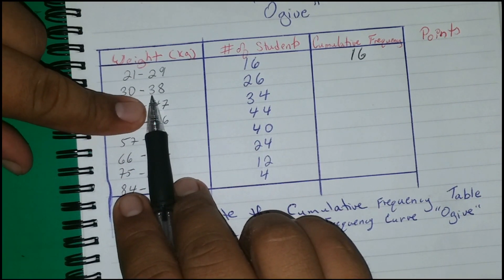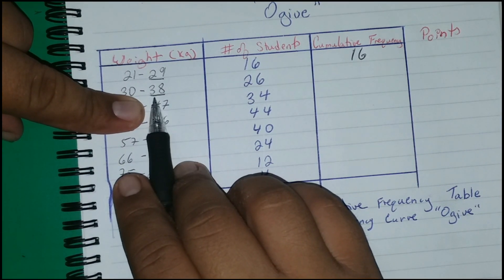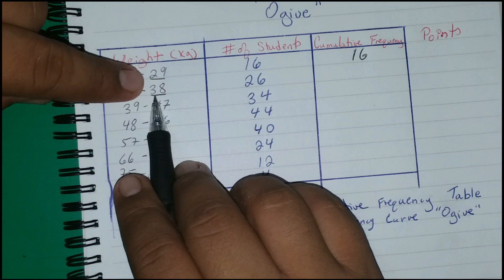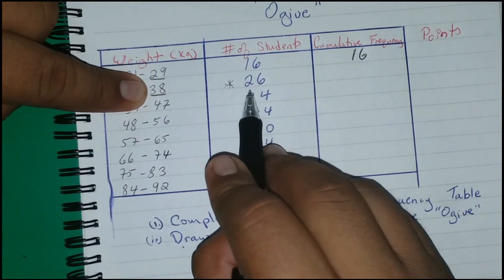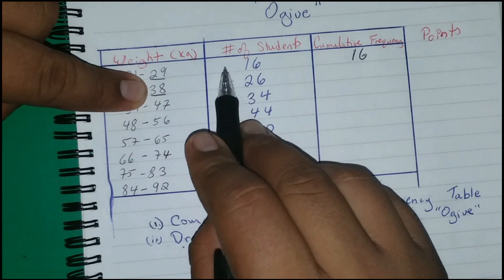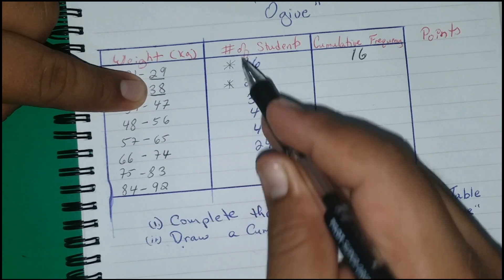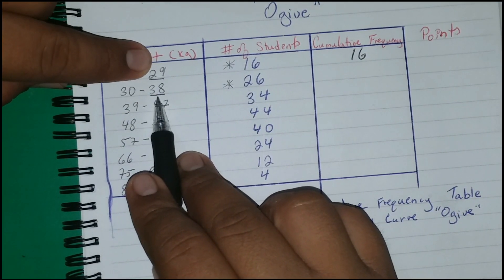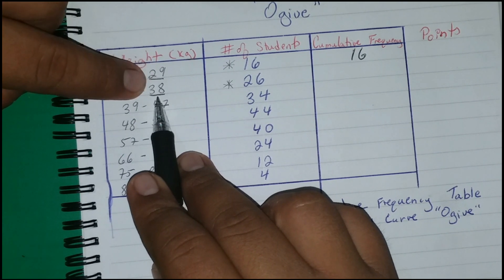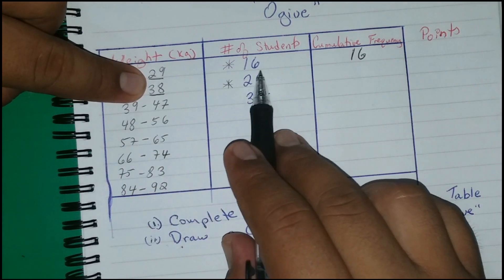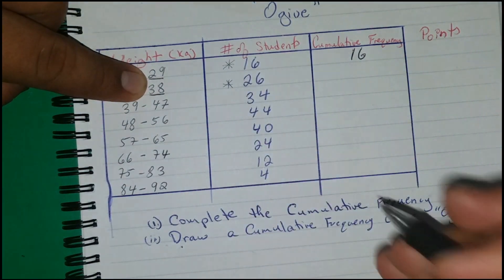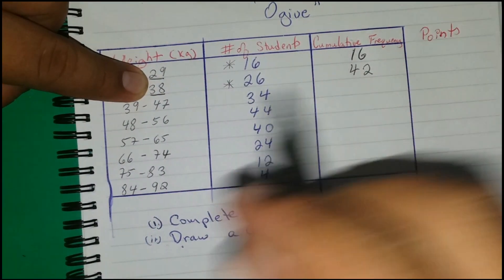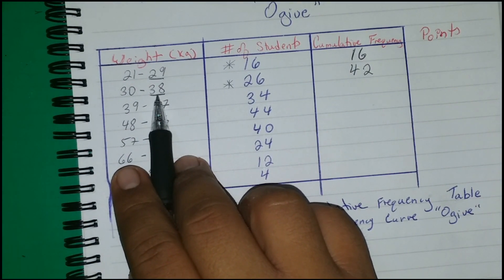The next value asks: how many students have a weight of 38 or less? Students with a weight of 29 or less are also less than 38, so we add the previous cumulative total. That gives us 26 plus 16, which equals 42. So 42 students have a weight of 38 or less.